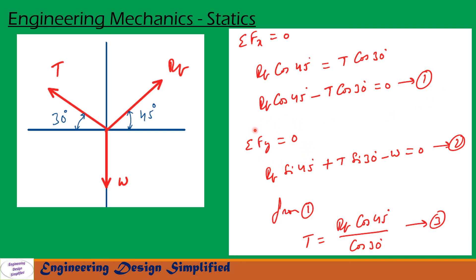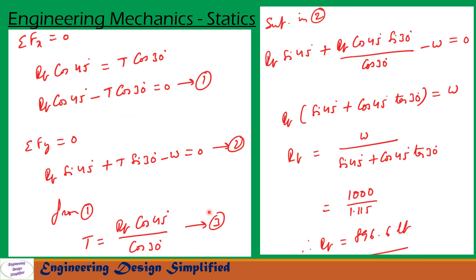Now let us resolve forces along the y-direction: sigma Fy equals 0. Along y, the vertical component of RB is RB sin 45, the vertical component of T is T sin 30, and W acts downwards, so RB sin 45 plus T sin 30 minus W equals 0. This is equation 2. From equation 1, T equals RB cos 45 divided by cos 30 — equation 3. Substituting into equation 2: RB sin 45 plus RB cos 45 times tan 30 minus W equals 0. After substituting W and simplifying, RB equals 896.6 lb.